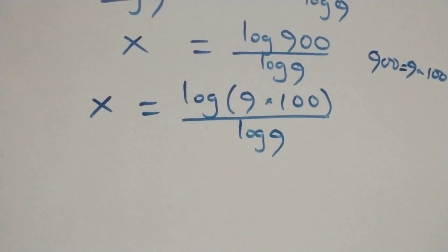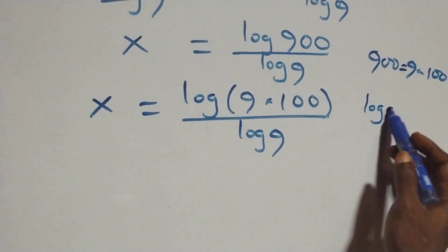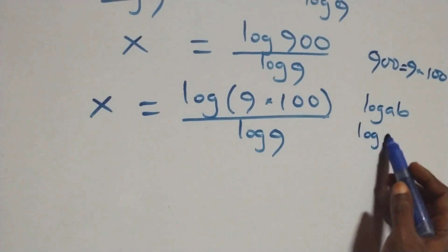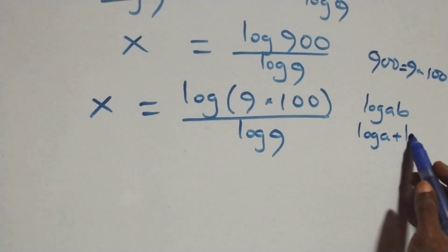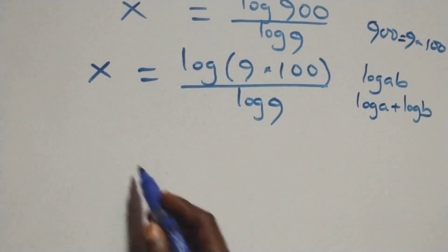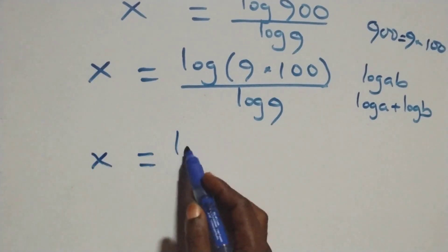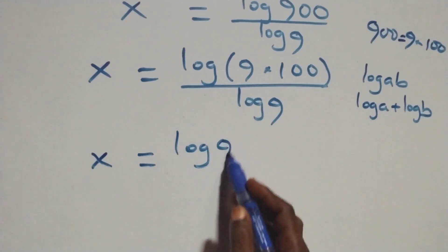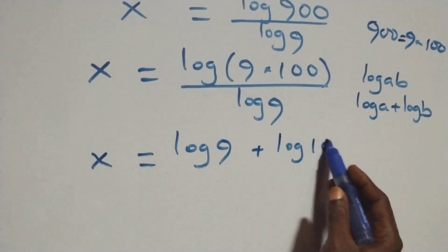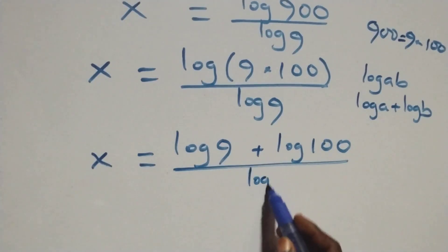Then here this follows the law of logarithms. When we have log(a times b), we write this as log a plus log b. So what we have becomes x equals to (log 9 plus log 100) over log 9.